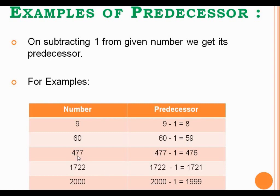If we want to find out the predecessor of 477, we have to just subtract 1 from 477, so we will get 476. 476 will be the predecessor of the given number 477.